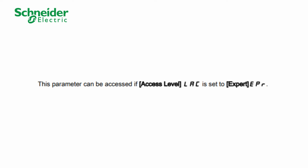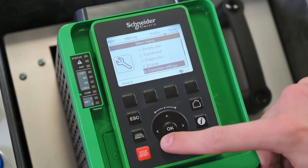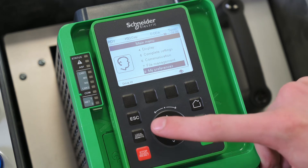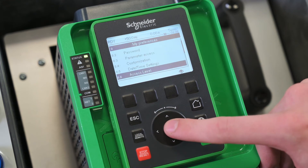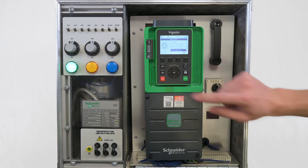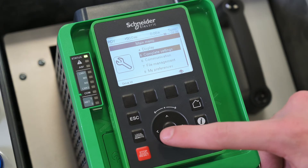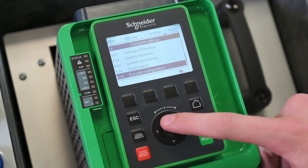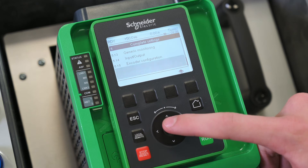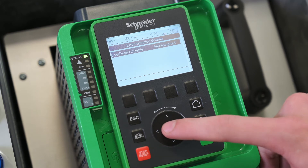Firstly, we are going to set the drive access level to Expert. Then, we are going to assign the error detection disable parameter to a digital input, here DI5. Navigate to Complete settings, then Error warning handling, then Error detection disable.